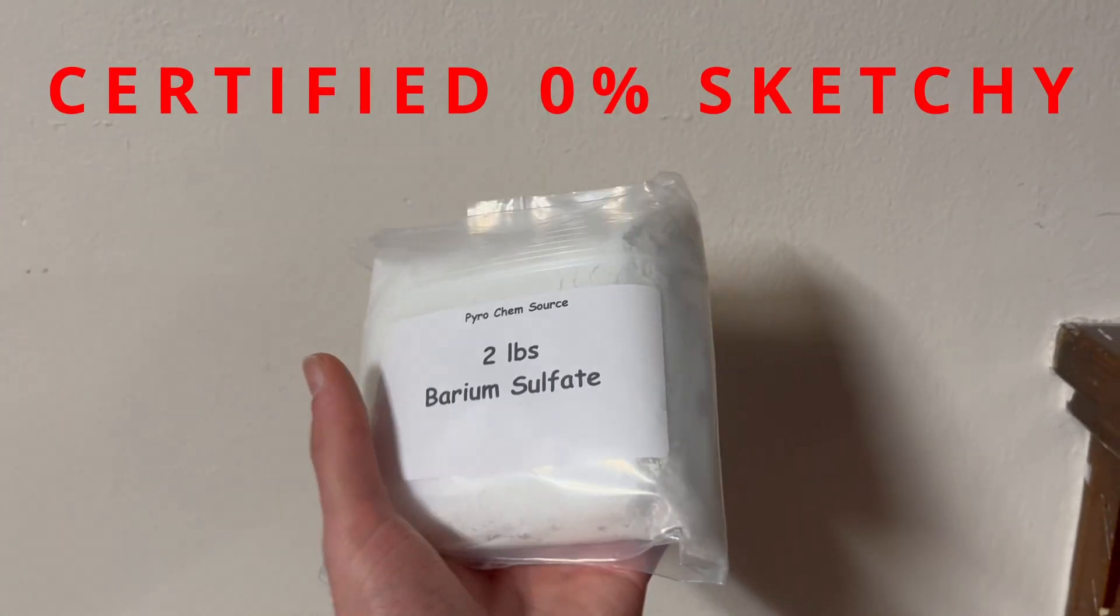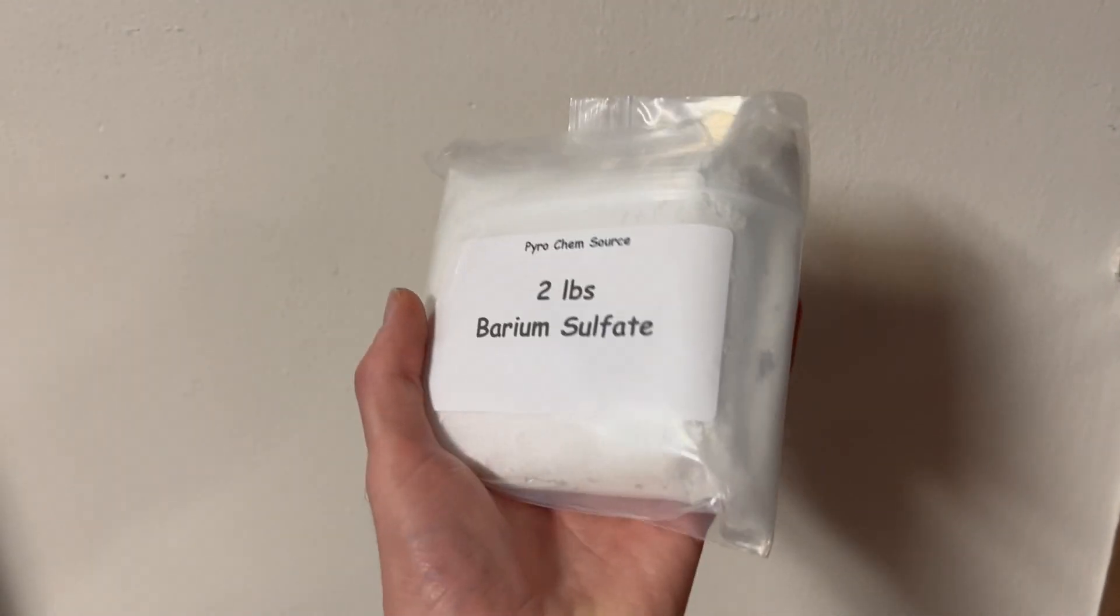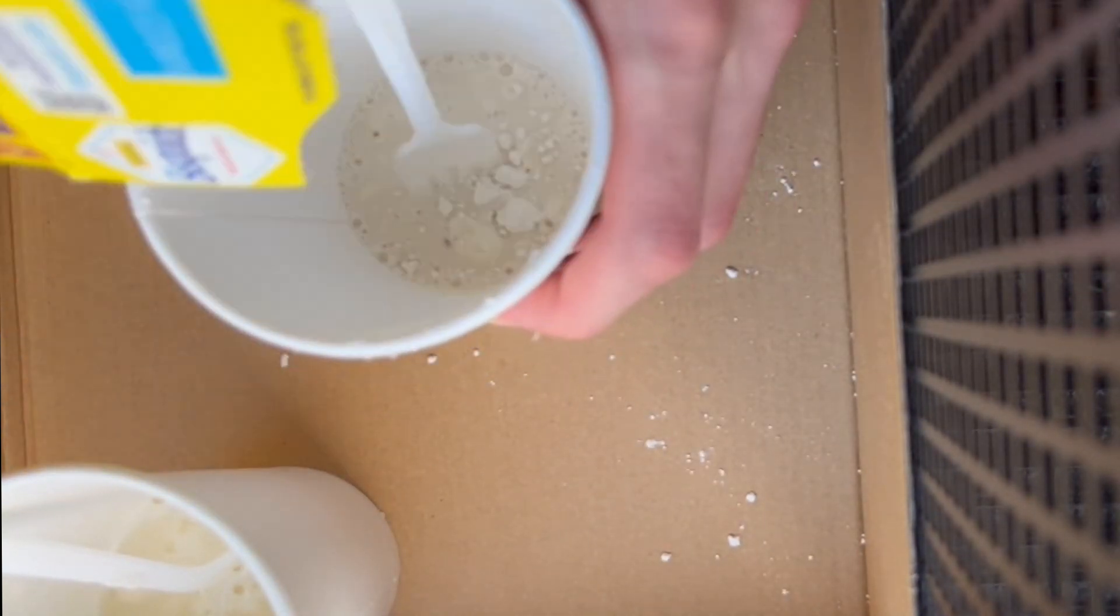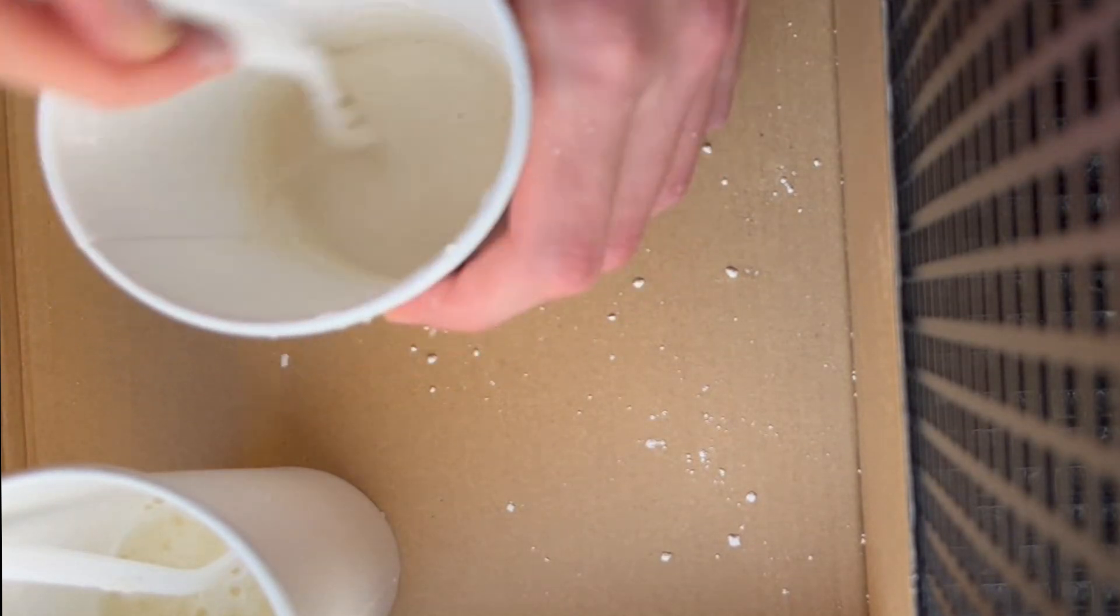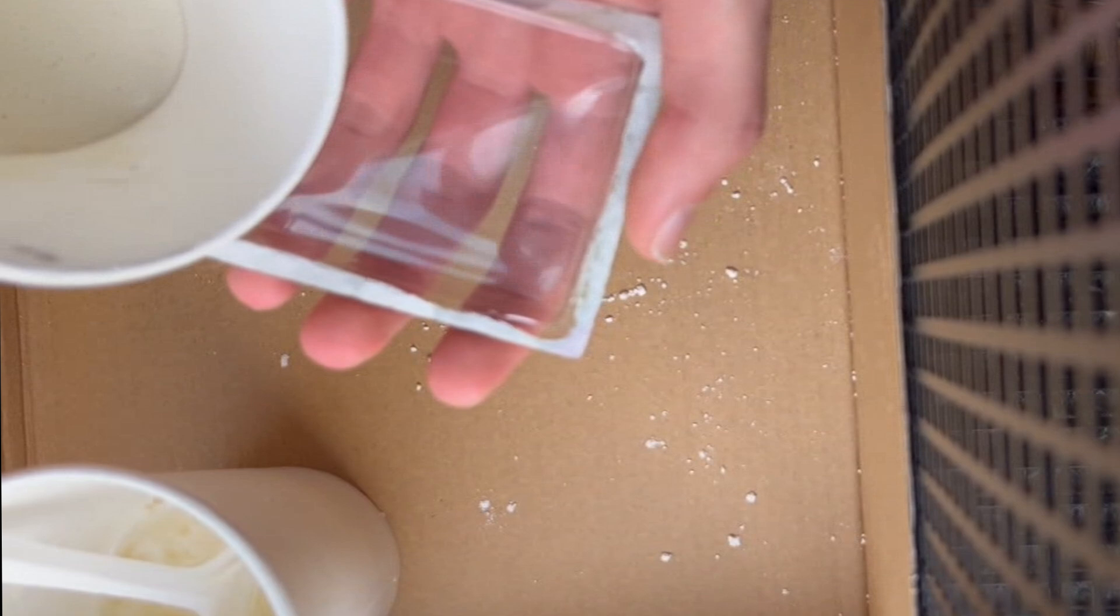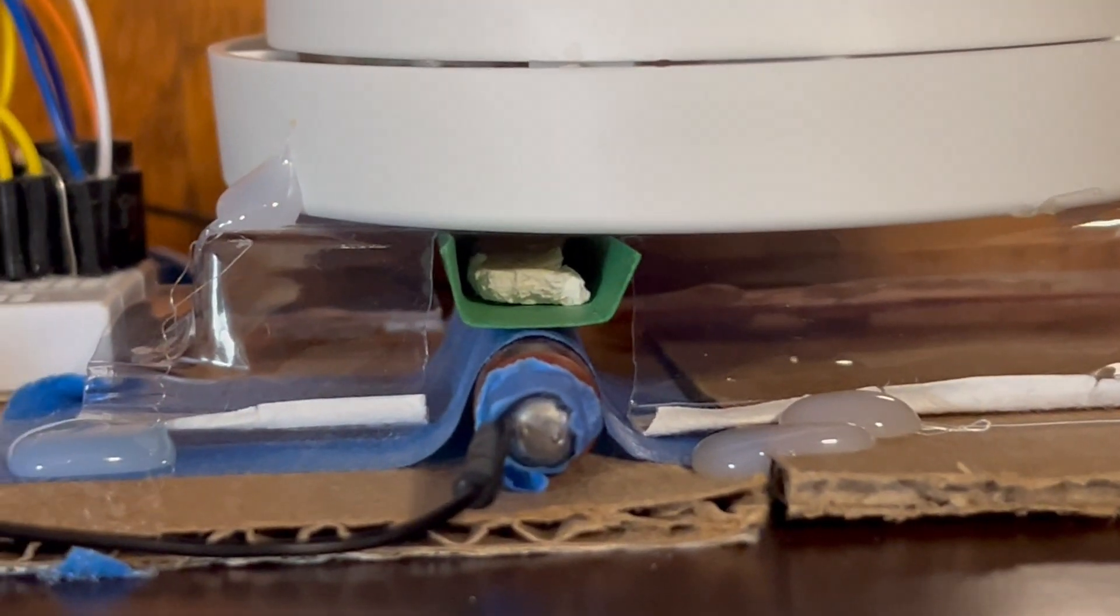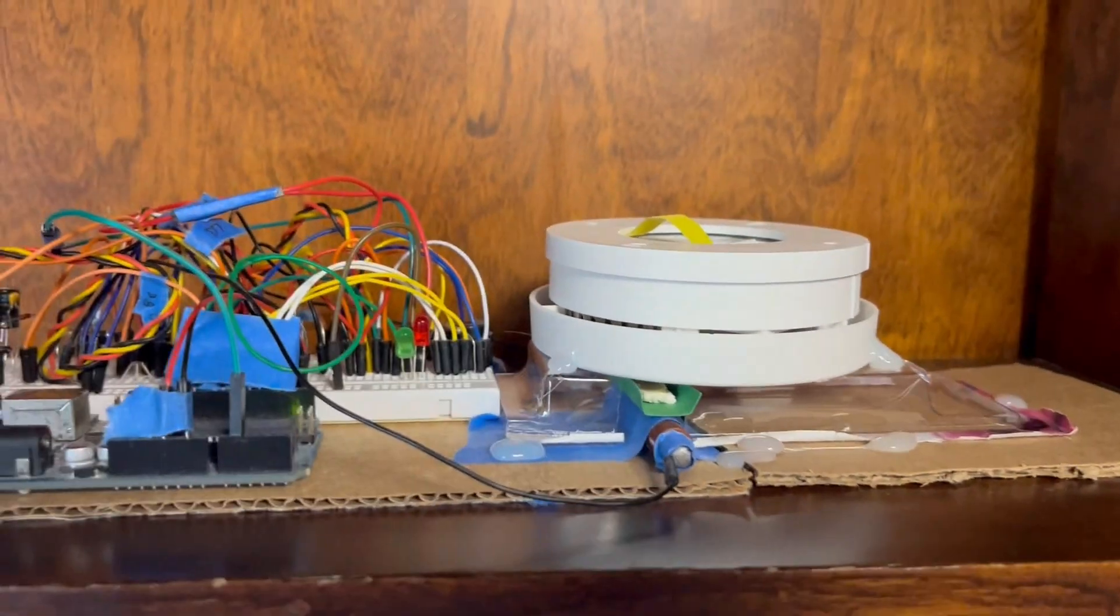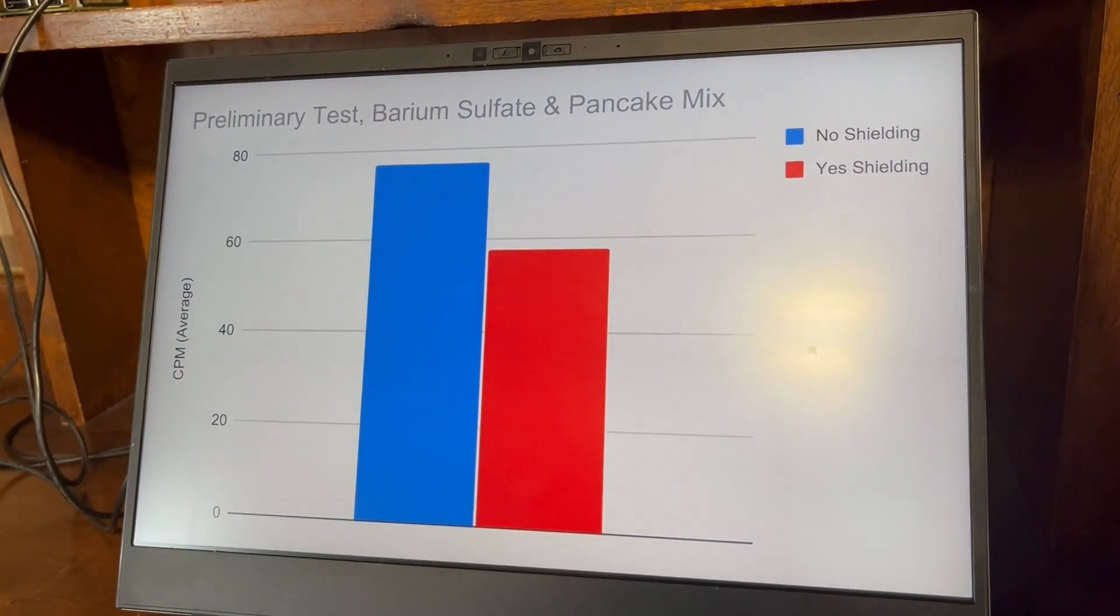It seemed to work pretty well. You can see the little chunks sitting on top there and that's the thing going off. I've been taking data for a while now and I got this. It actually works. I made radiation shielding out of bloody pancakes.